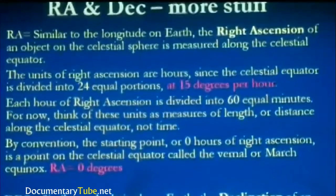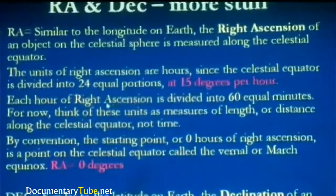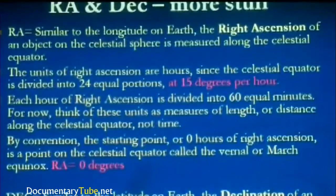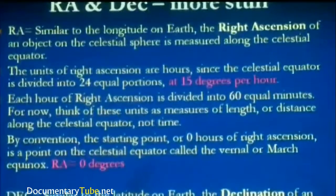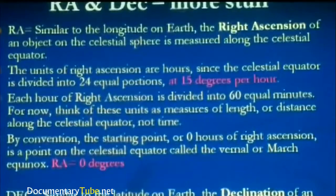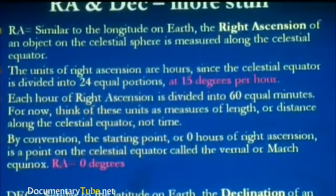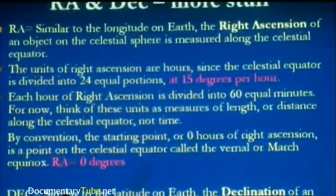Right ascension divides the sky into pie slices that line up with longitude, but unlike longitude, we talk about them in terms of hours and minutes. A complete arc of 360 degrees is divided into 24 hours. The units of right ascension are hours since the celestial equator is divided into 24 equal portions at 15 degrees per hour. So if you measured one hour with a protractor, that would translate into 15 degrees of angle.